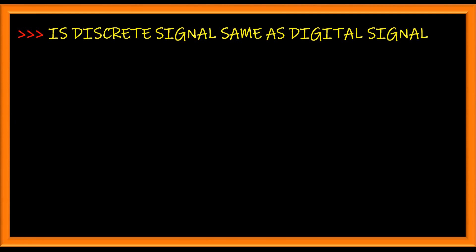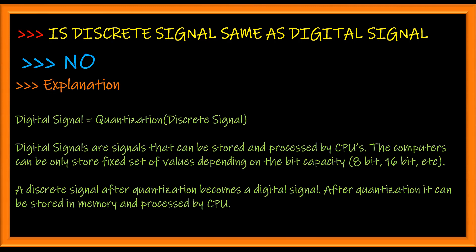Is a discrete signal the same as a digital signal? Again, the answer is no. A digital signal can be obtained from a discrete signal by a process called quantization. A quantized discrete signal is your digital signal.